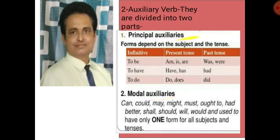Principal auxiliaries are: am, is, are, was, were, have, has, had, do, does, did. Modal auxiliaries are: can, could, may, might, must, ought to, had, shall, should, will, would, etc.